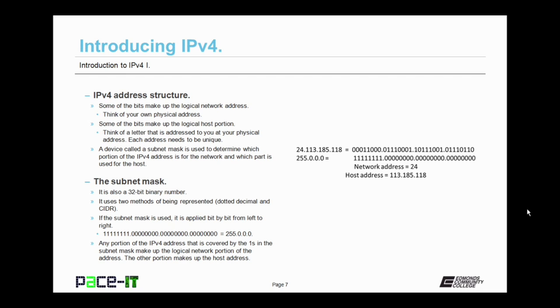The subnet mask 255.0.0.0 is applied left to right to the IP address. By the way, if that was represented in CIDR, that 255.0.0.0 would be represented by a slash 8. Any portion of the IPv4 address that is covered by the ones in the subnet mask make up the logical network portion of the address. The other portion makes up the host address. So with that IPv4 address that we have there to the right, the network address would be network 24, and the host address would be 113.185.118.